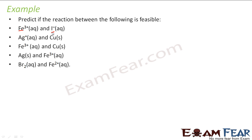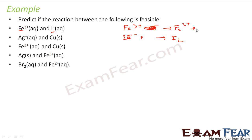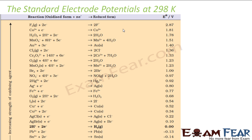So we have Fe³⁺ and I⁻. The balanced half-reactions are: Fe³⁺ takes one electron to give Fe²⁺, and 2I⁻ gives I₂ releasing two electrons. We multiply the Fe³⁺ half-reaction by 2 on both sides to balance the charge. These are the two half-reactions we have. Let's find the electrode potential for both.